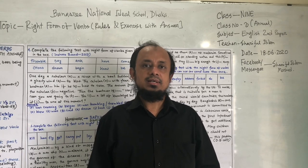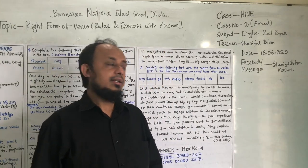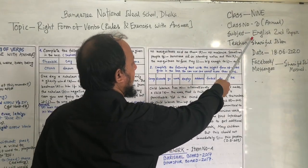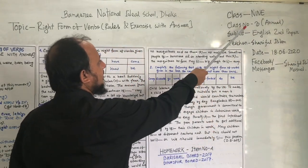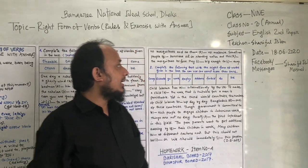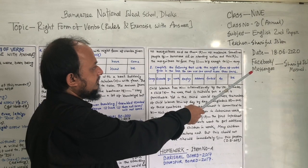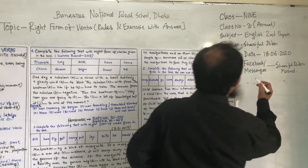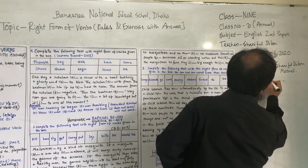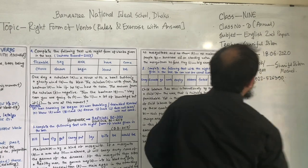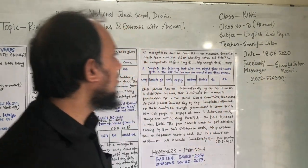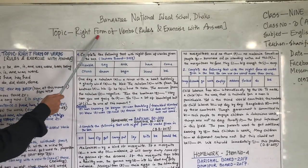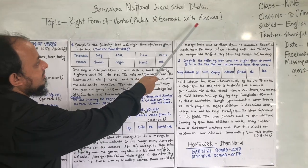So dear students, let's begin. This is class number 3. Today's topic is: Write Right Form of Verbs — rules and exercise with answers.